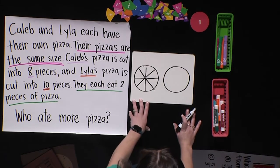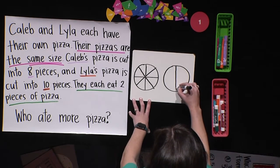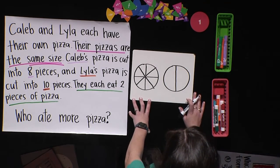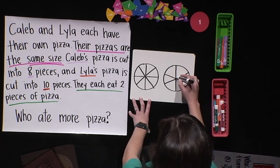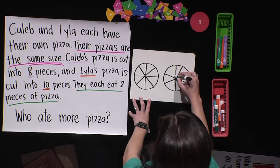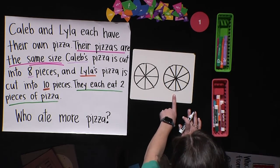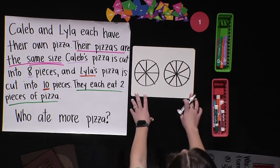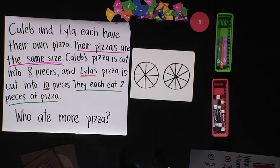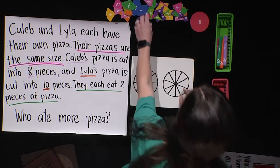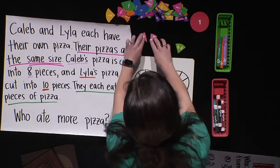The other side is cut into tenths, which is a little more difficult to draw, so bear with me as I make this work. There should be five slices on each side. Mine's not perfect, and yours may not be either, but as long as there are ten total pieces, it works just fine. I'm going to take a break from my marker and pull some fraction strips to better show you the sizes. Lila had two tenths, and Caleb ate two eighths.